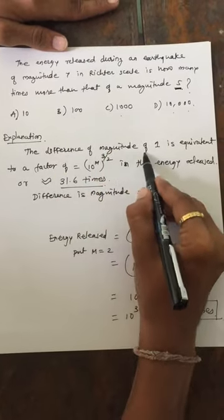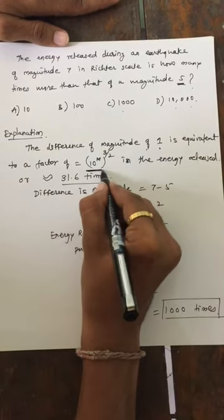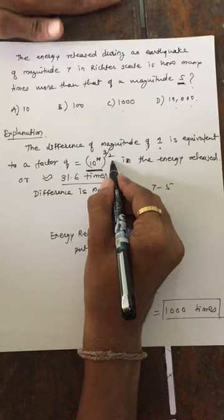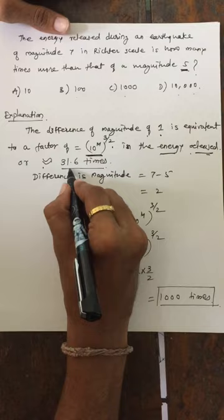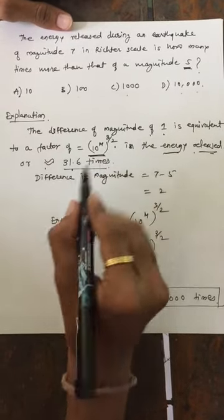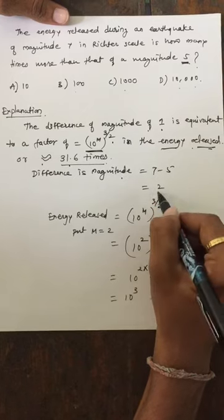The difference of magnitude of 1 is equivalent to a factor of 10 to the power magnitude to the power 3 by 2 in energy released. This would become equal to approximately 31.6 times. Now in the given question, difference of magnitude is given 7 minus 5 means 2.